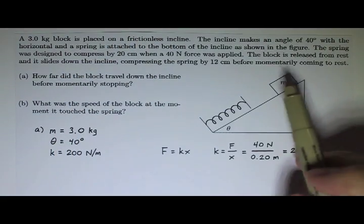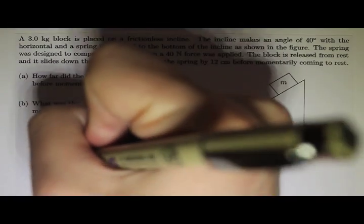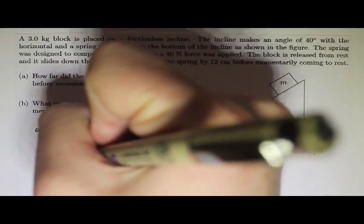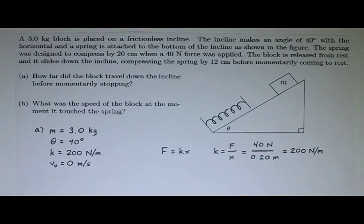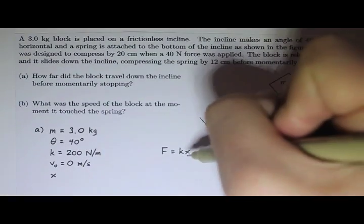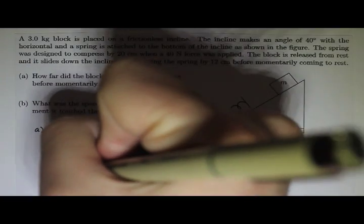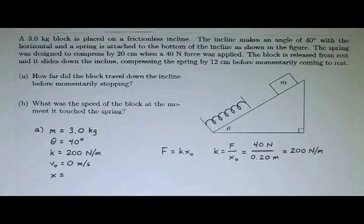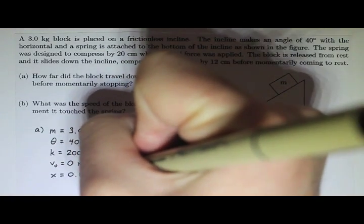And see what else we have. The block is released from rest and it slides down the incline. So, release from rest, I'll just say its initial speed here is 0 meters per second. And it compresses the spring by 12 centimeters. So, let's say that's X. And maybe just to make sure, I'll call this X naught just so we know it's not the same X. And this X is 12 centimeters. So, that's 0.12 meters.